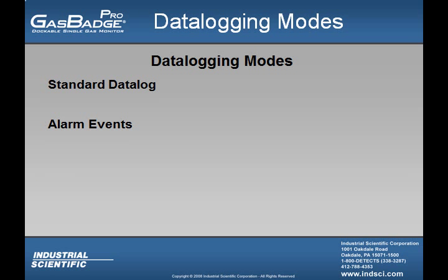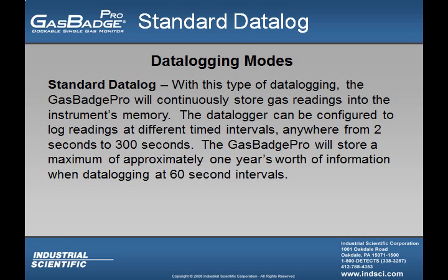Available in the Gas Badge Pro are two data logging modes: standard data logging and alarm events. With standard data logging, the Gas Badge Pro will continuously store gas readings into the instrument's memory. The data logger can be configured to log readings at different timed intervals, anywhere from 2 to 300 seconds. The Gas Badge Pro will store a maximum of approximately one year's worth of information when data logging at 60-second intervals.